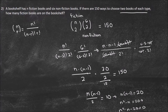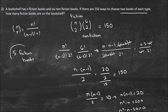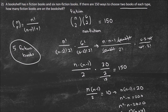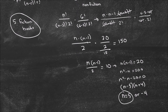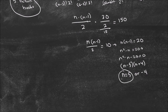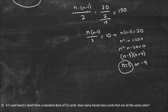What that means in terms of the problem — how many fiction books are on the bookshelf? There are 5 fiction books. This was a good problem to get you really thinking about combination formulas and factorials. You really have to understand factorials to recognize all the cancellations you can make.